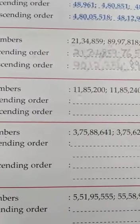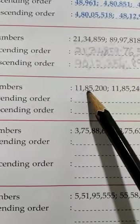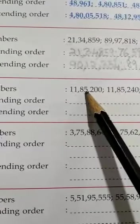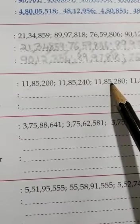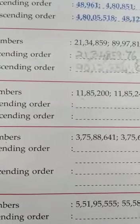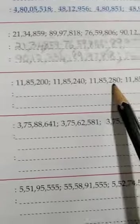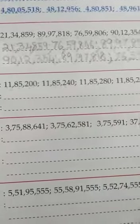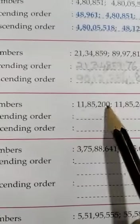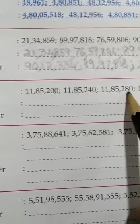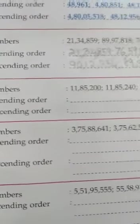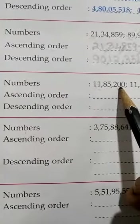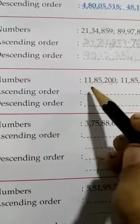The second digit is also 1 for all four numbers, and the third digit is 8 for all, the fourth is 5 for all, and the fifth is 2 for all. So we have to go further. In the tens place (sixth digit), the digits are: 0, 4, 8, and 6. The smallest is 0, so the number with 0 in the tens place is the smallest.